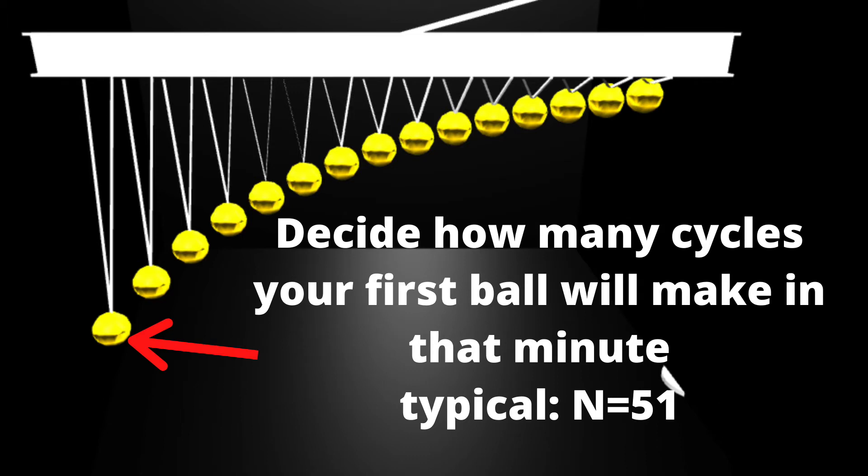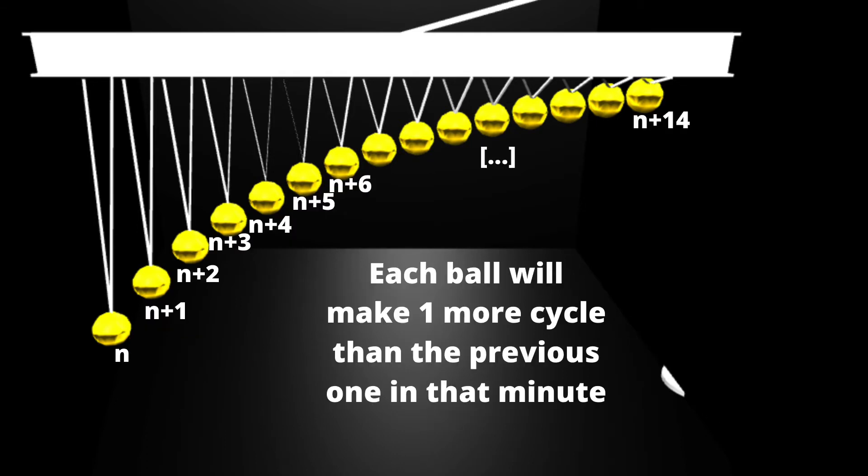Now you need to decide how many cycles your first ball will make in that minute. The typical number that people use is 51. In my simulation I use only 10. That means that the balls move slower and also a higher number requires a shorter length in the strings as we will see in the equations. The trick here is that all the next balls will use one additional cycle. So if you decide to have 51 cycles for your first ball, the second one will have 52, the next one 53 and the last one will have 65.